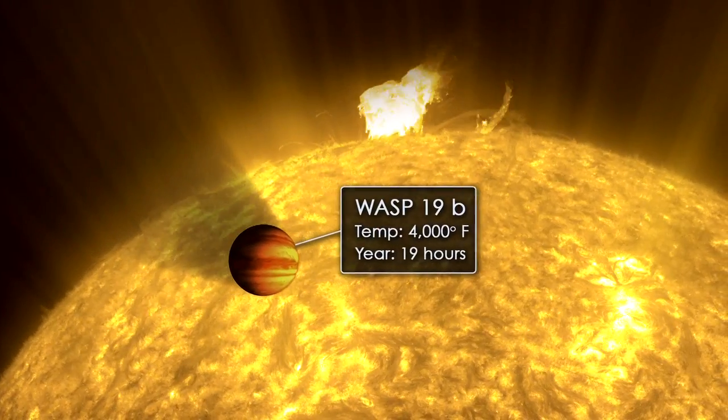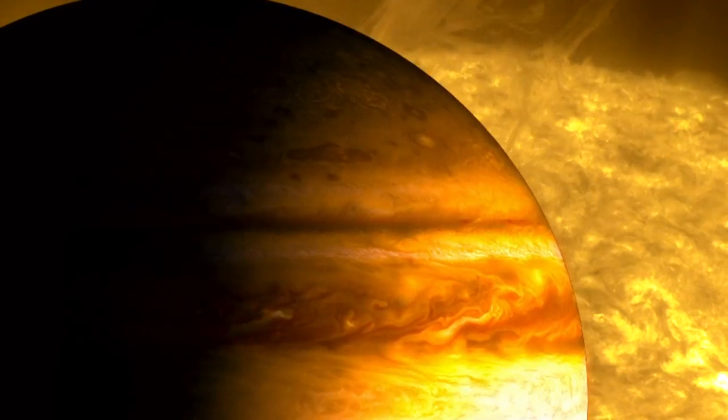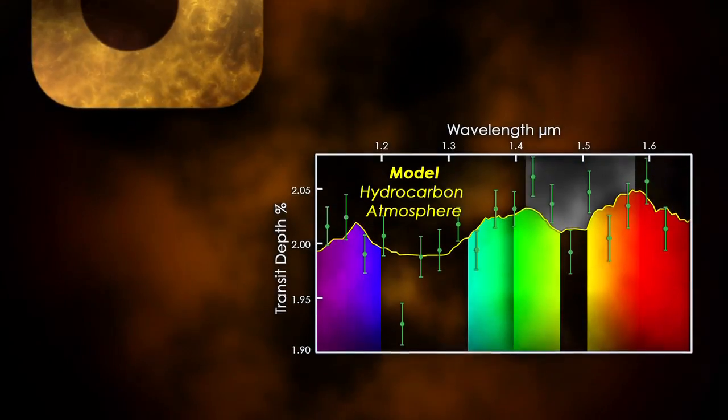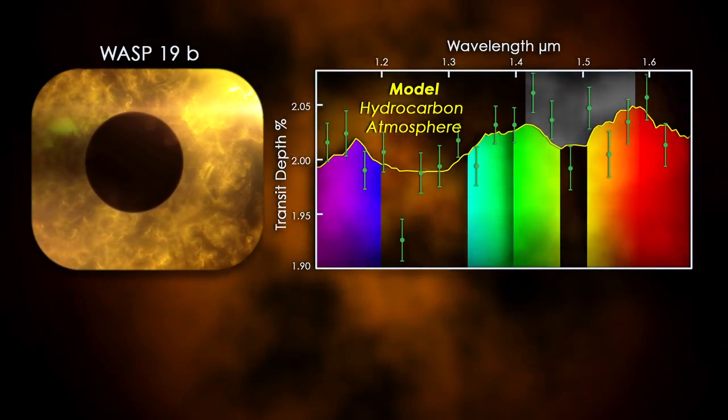Visitors who could survive the heat might complain about the air quality. Planet WASP-19b's jagged transit depth curve suggests a deep atmosphere of poisonous hydrocarbons, with methane and hydrogen cyanide far more abundant than water.